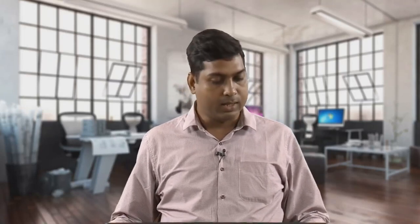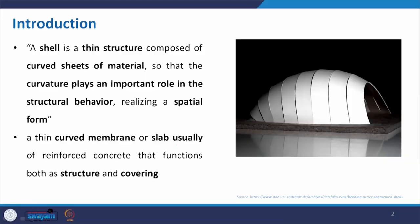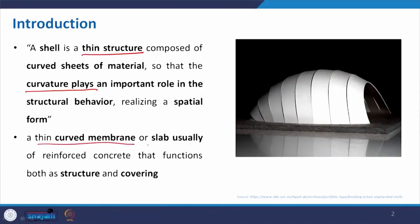If you see the definition of shell structures from different sources, it says a shell is a thin structure composed of curved sheets of material, so that the curvature plays an important role in the structural behavior, realizing a spatial form. Two important terms are: one is a very thin structure, and the second is curvature. Another definition describes it as a thin curved membrane or slab, usually of reinforced concrete, that functions both as structure and covering.